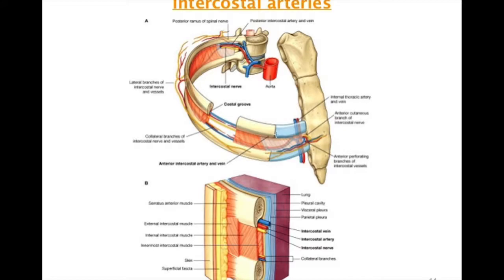In this diagram you can see the superior border and inferior border of the rib. On the inferior side there is a groove containing the intercostal vessels and nerve. They are arranged using the formula VAN: V for intercostal vein, A for intercostal artery, and N for intercostal nerve. The costal groove on the inferior border hangs from the sides and accommodates these structures.